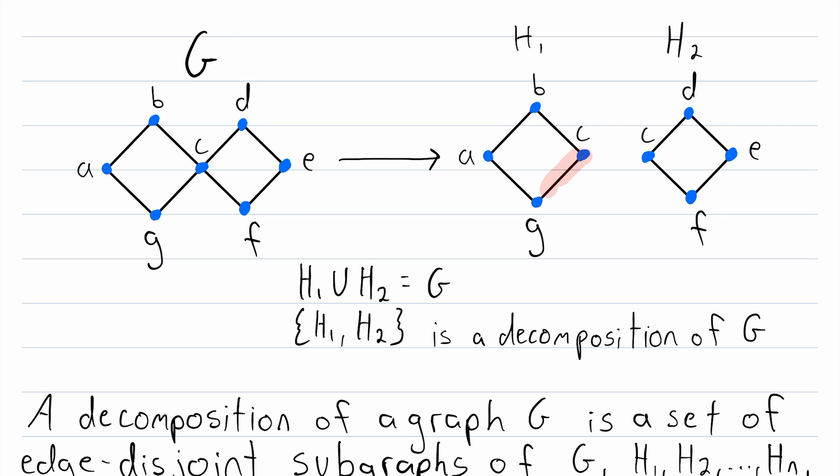As a counterexample, if H1 didn't have this edge joining G and C, then this would no longer be a decomposition of G, because when we union these subgraphs together, we'd be missing an edge.